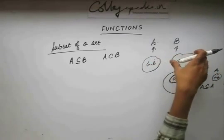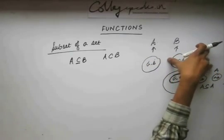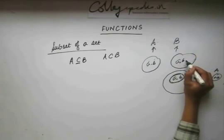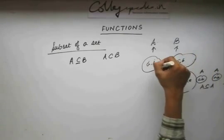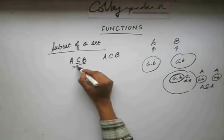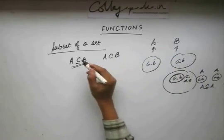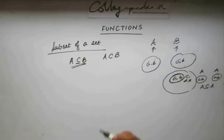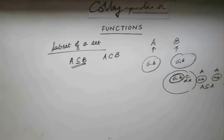All the elements of set A are in set B, but there is not a single element in B which is not in set A. So in this case, A is not a proper subset of B. This is how we define the subset of a set.